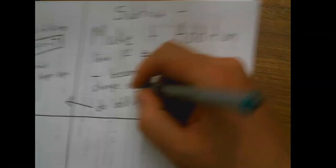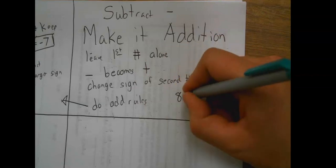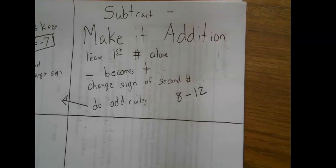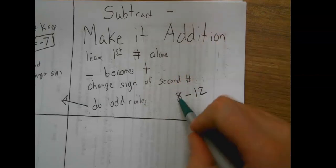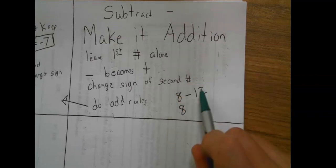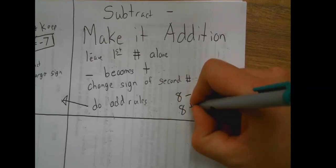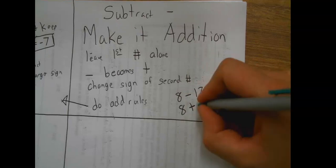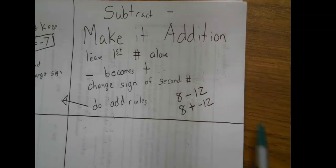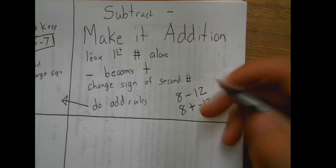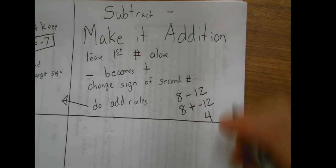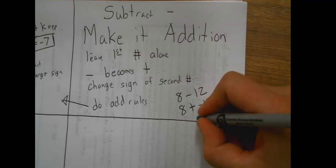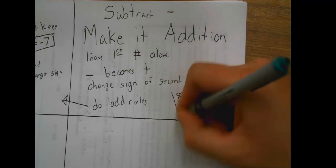So an example of that would be eight minus twelve. So we keep the first number. We change the minus to a plus. And the twelve becomes a negative twelve. At this point, the addition rules say there are different signs. This one's positive, this one's negative. So we subtract, twelve take away eight is four. And twelve is bigger, so it's going to be a negative four.